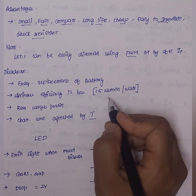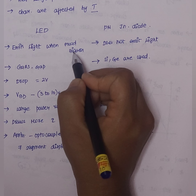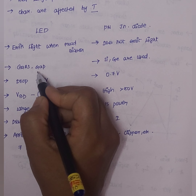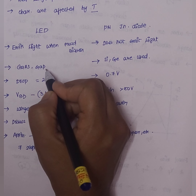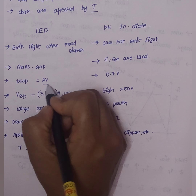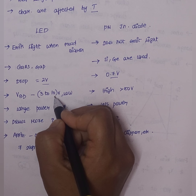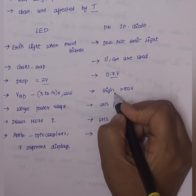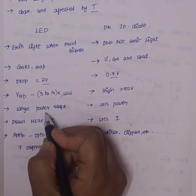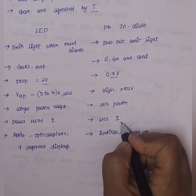Now let's compare the light emitting diode to the PN junction diode. The LED emits light when forward biased, whereas the PN junction diode has no light emission. For material, we use gallium arsenide and gallium phosphide for LED, versus silicon or germanium for PN junction. The voltage drop is 2V for LED versus 0.7V for PN junction. The breakdown voltage range is 3 to 10V for LED, which is very low, whereas the PN junction has greater than 50V. LED requires large power and more current, while PN junction uses less power and less current.